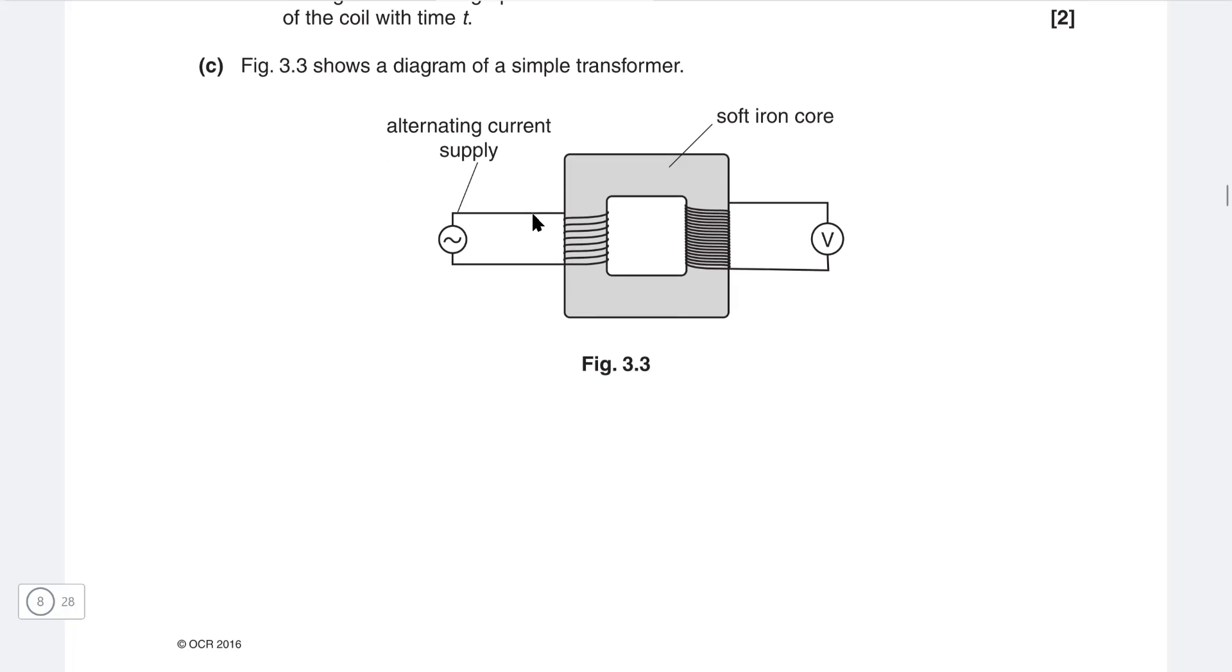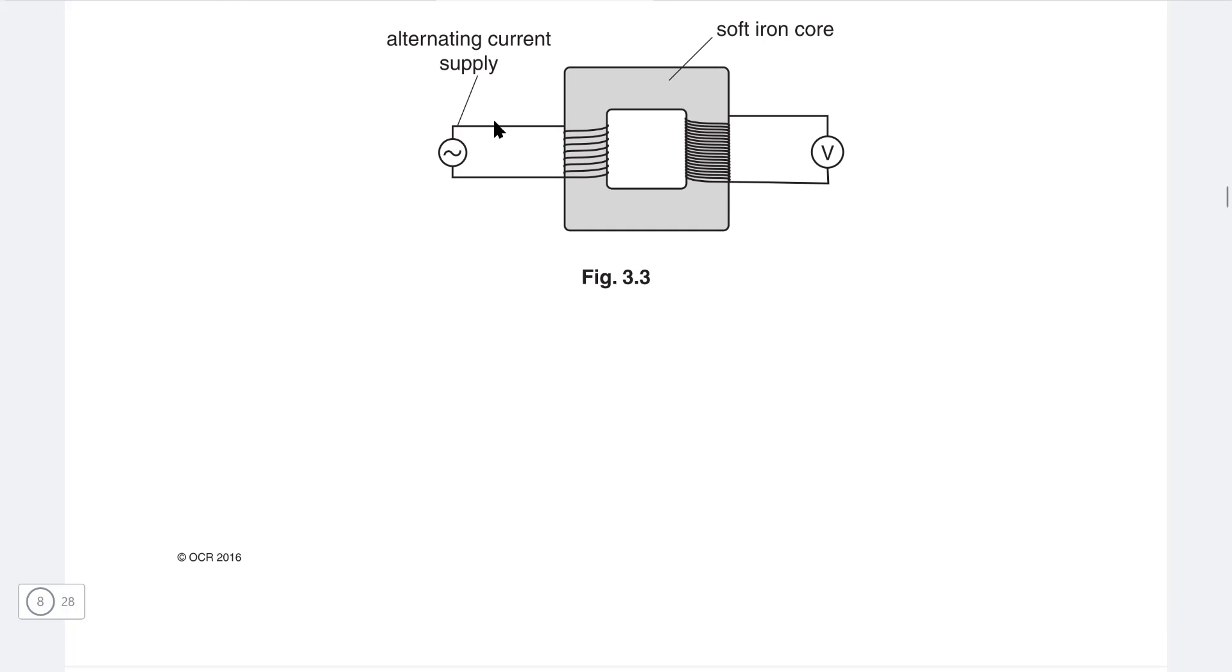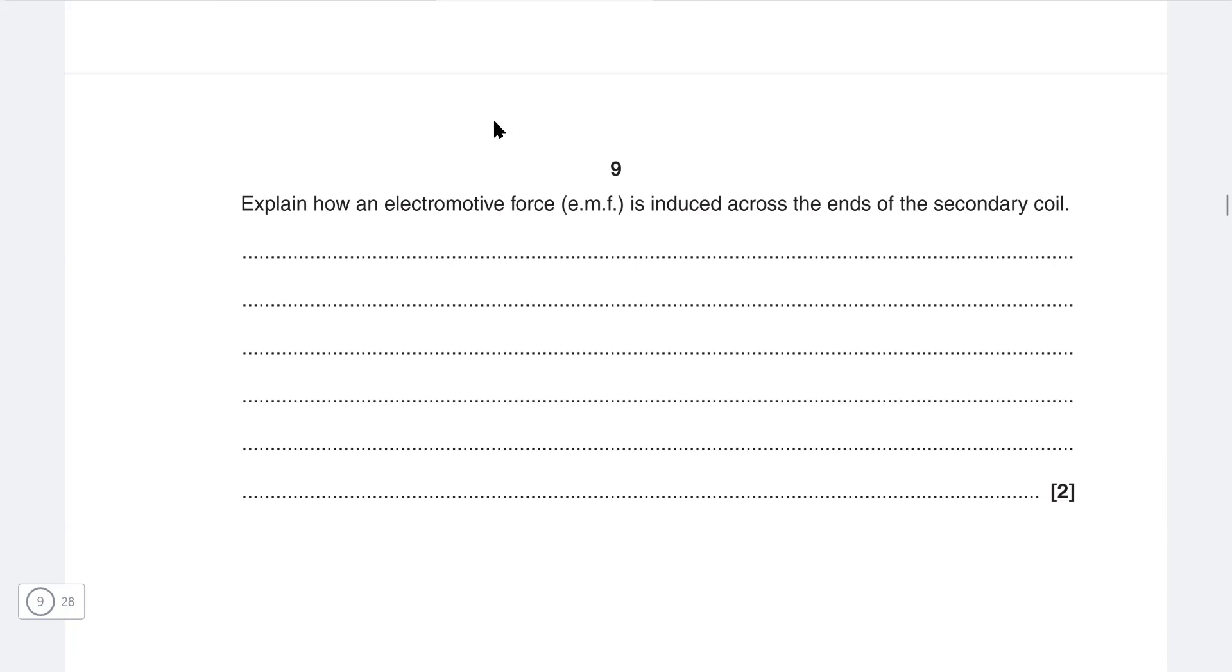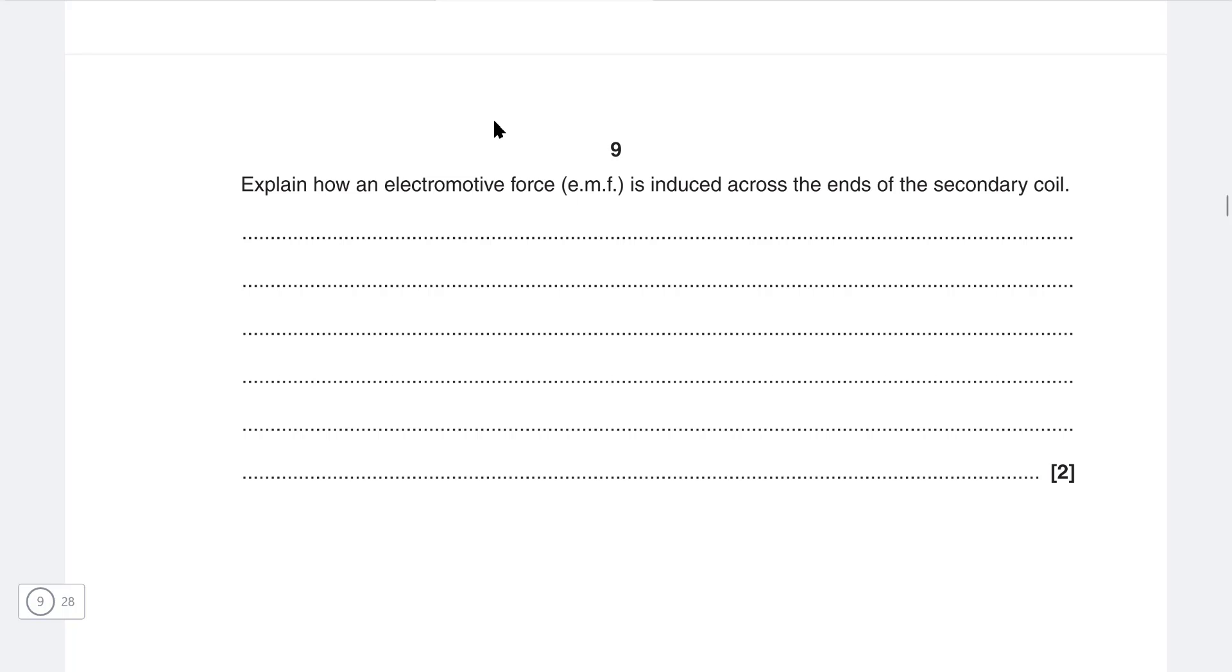Figure 3.3 shows a diagram of a simple transformer. We have an AC power supply, a soft iron coil, and some voltmeters. Explain how an electromotive force is induced across the ends of the secondary coil. The crucial bit is that due to the AC current in the primary coil, there is a changing magnetic flux linkage.